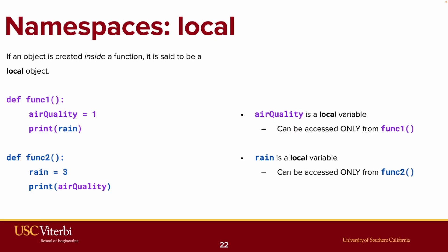If an object is created inside a function, it is said to be a local object, local to that function or to that namespace. In other words, the rain variable in func2 and the air quality variable in func1 are both local variables because they can only be accessed from their respective functions.